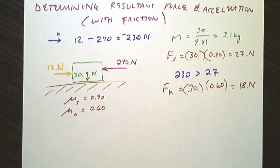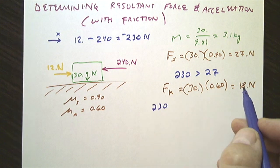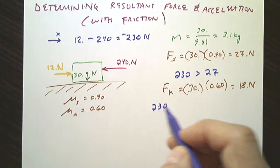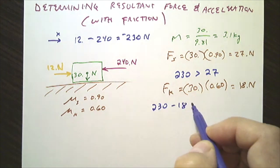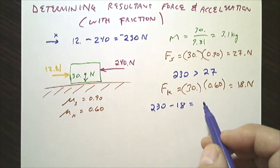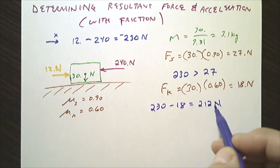So I would determine the resultant force would be 230. Friction force is always against the motion, so 230 minus 18, and that resultant force would be 212 newtons.